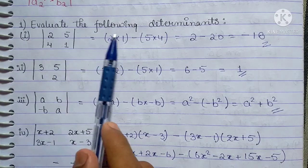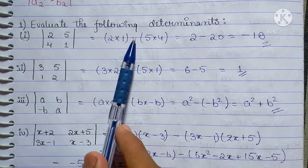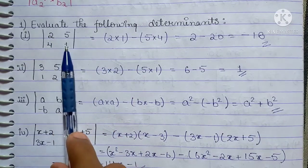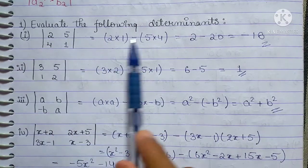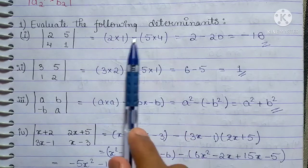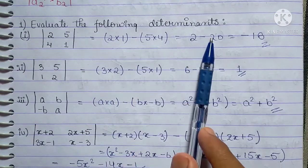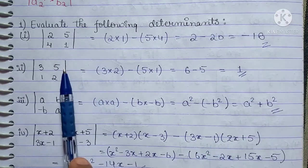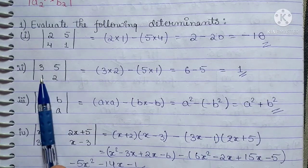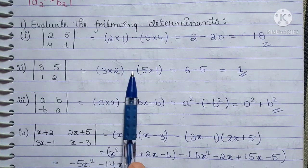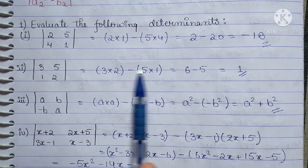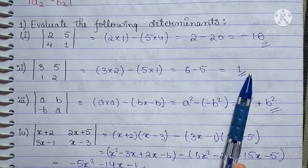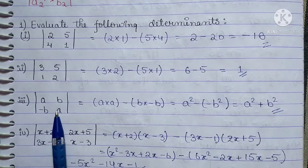2 into 1 minus 4 into 5 — इसको solve करें। 2 minus 20 — so the answer becomes minus 18. Next part: 3 into 2 minus 5 into 1 — that is 6 minus 5, which becomes 1.